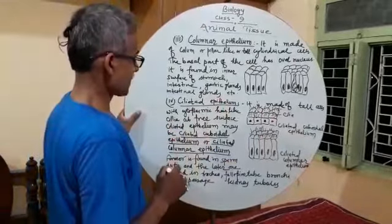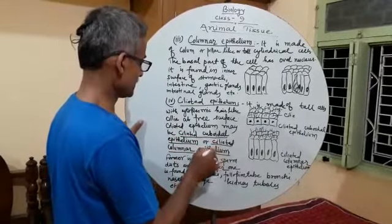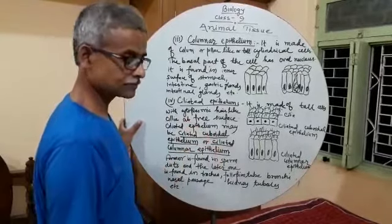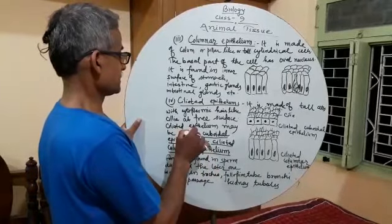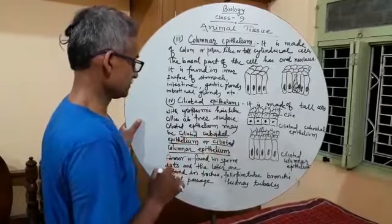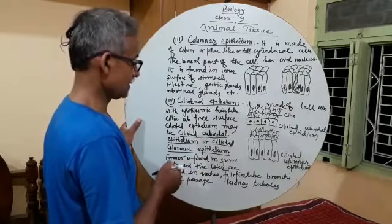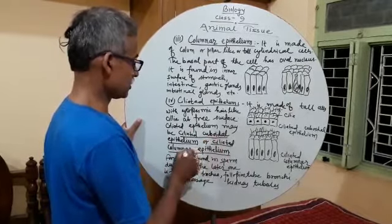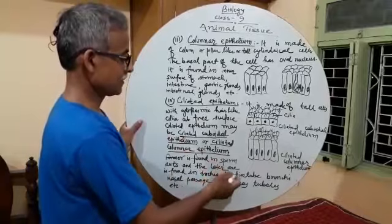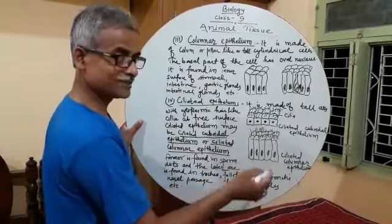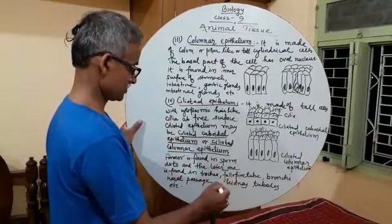The ciliated epithelium may be ciliated cuboidal epithelium or ciliated columnar epithelium. The ciliated cuboidal epithelium is found in sperm ducts, while the ciliated columnar epithelium is found in the trachea, fallopian tube, bronchi, nasal passages, kidney tubules, etc.